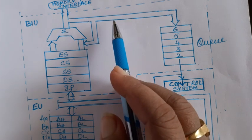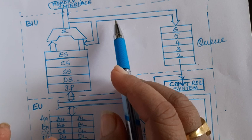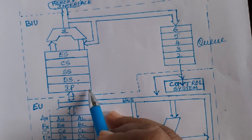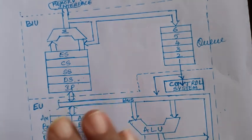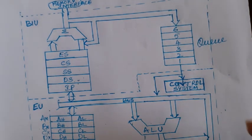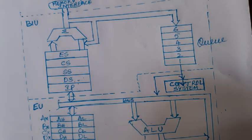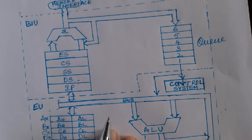The 8086 address bus is 20 bits, designed to access 1 megabyte of memory. If the address bus were 16 bits it could access only 64K of memory, but with a 20-bit address bus it can access 1 megabyte of memory space. Since the register is only 16 bits, to solve this problem the processor is designed to access the 1 megabyte memory space in the form of segments. The 1 megabyte memory space is logically divided into segments, each segment being 64 kilobytes.